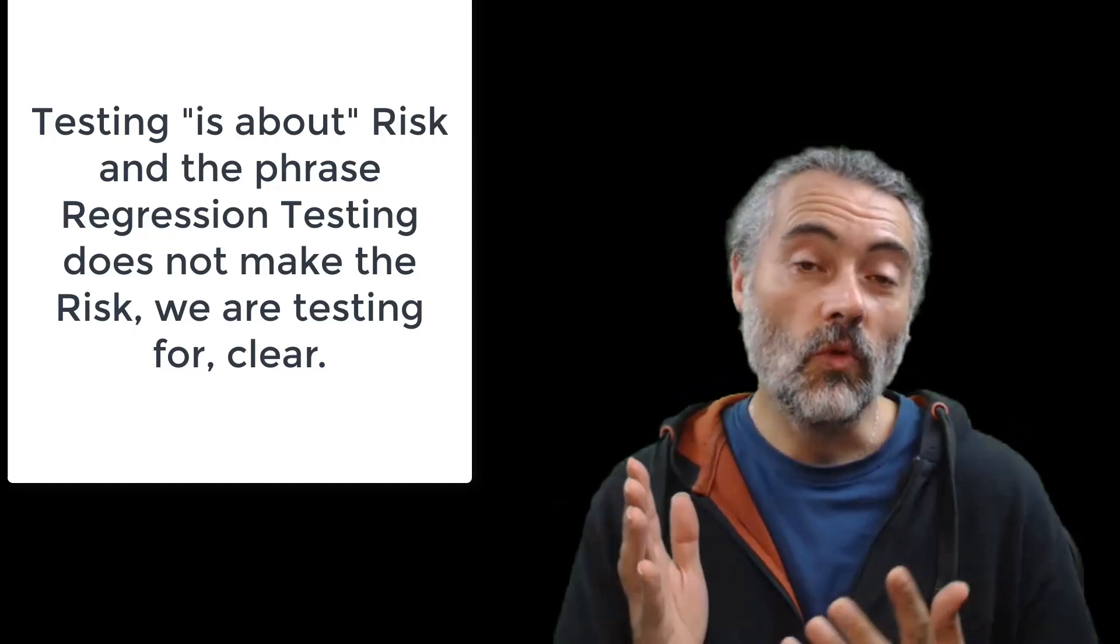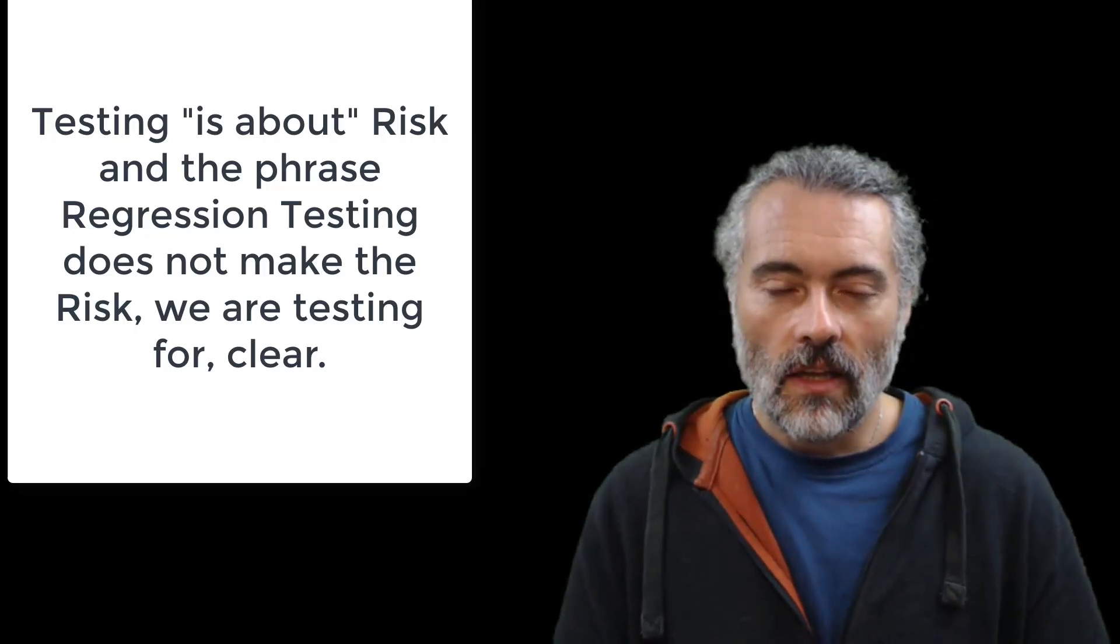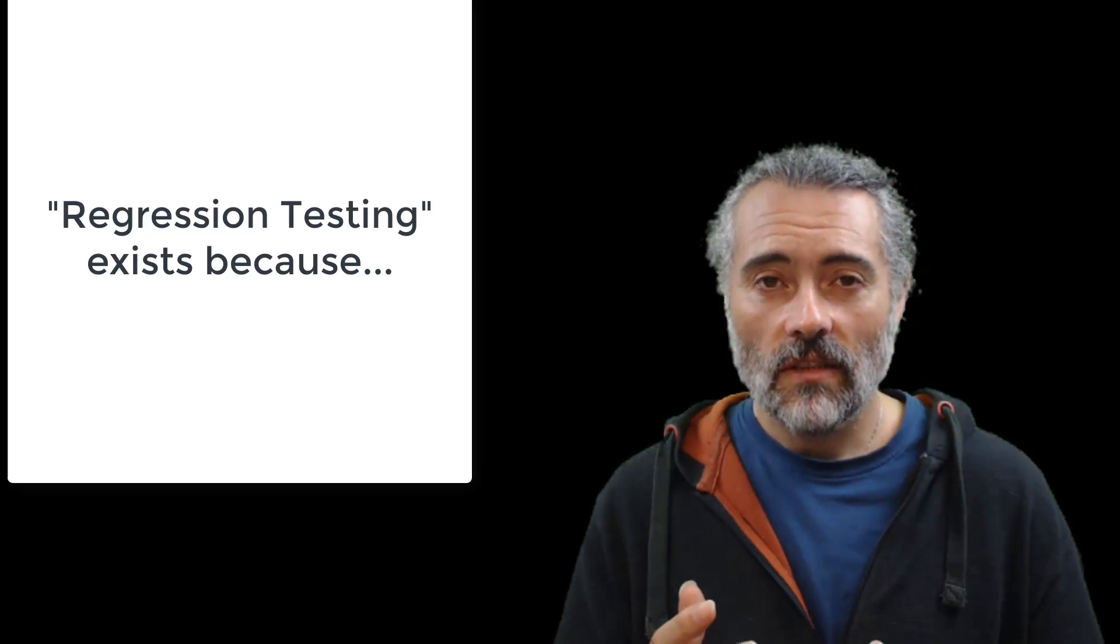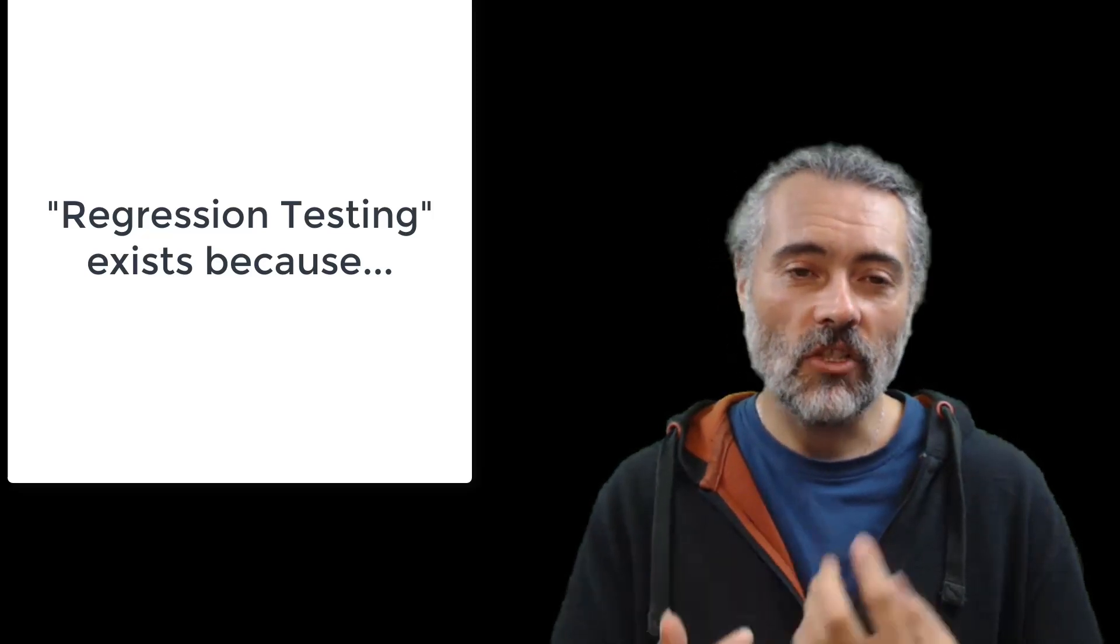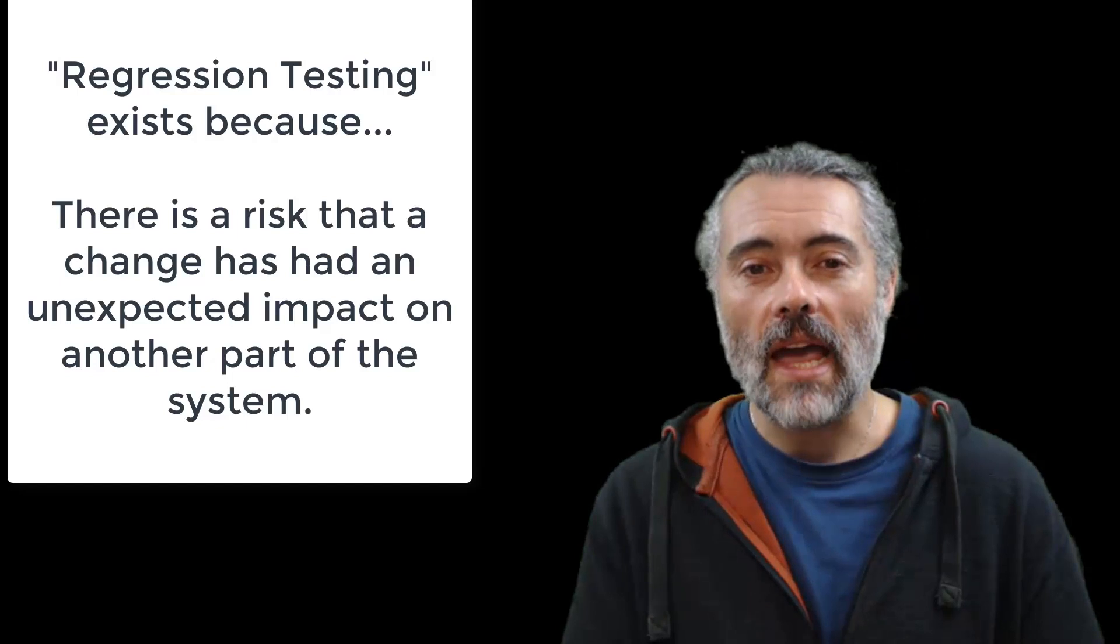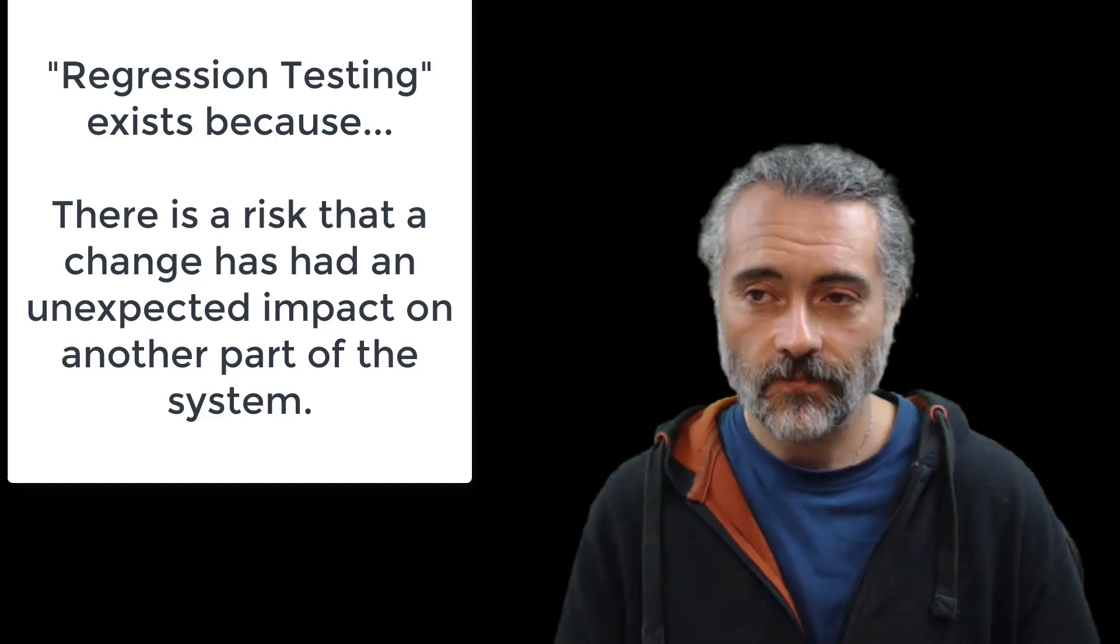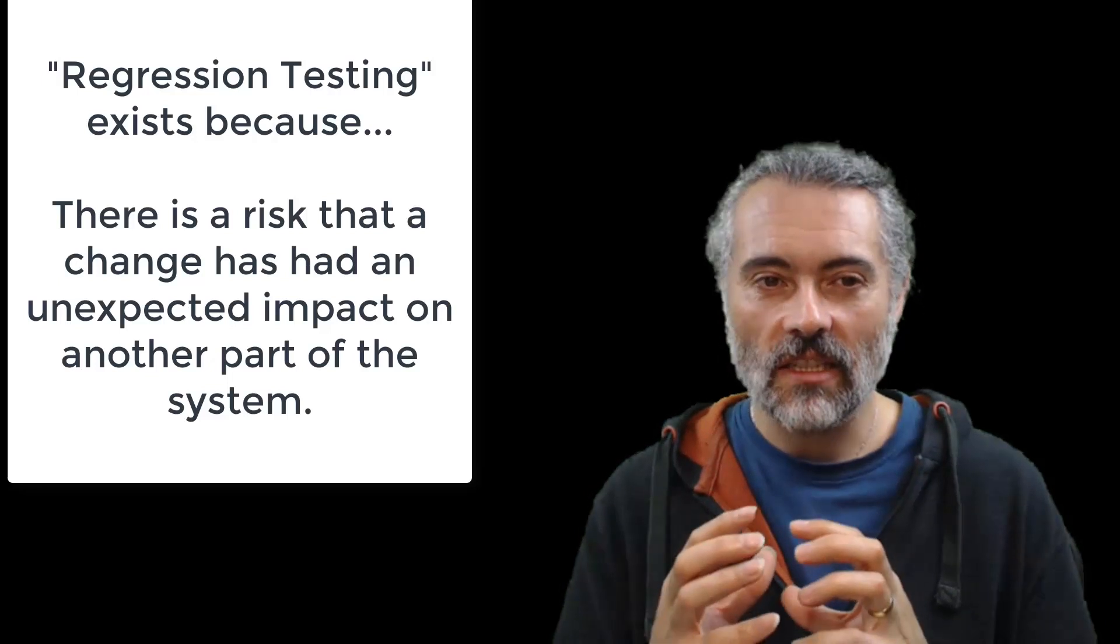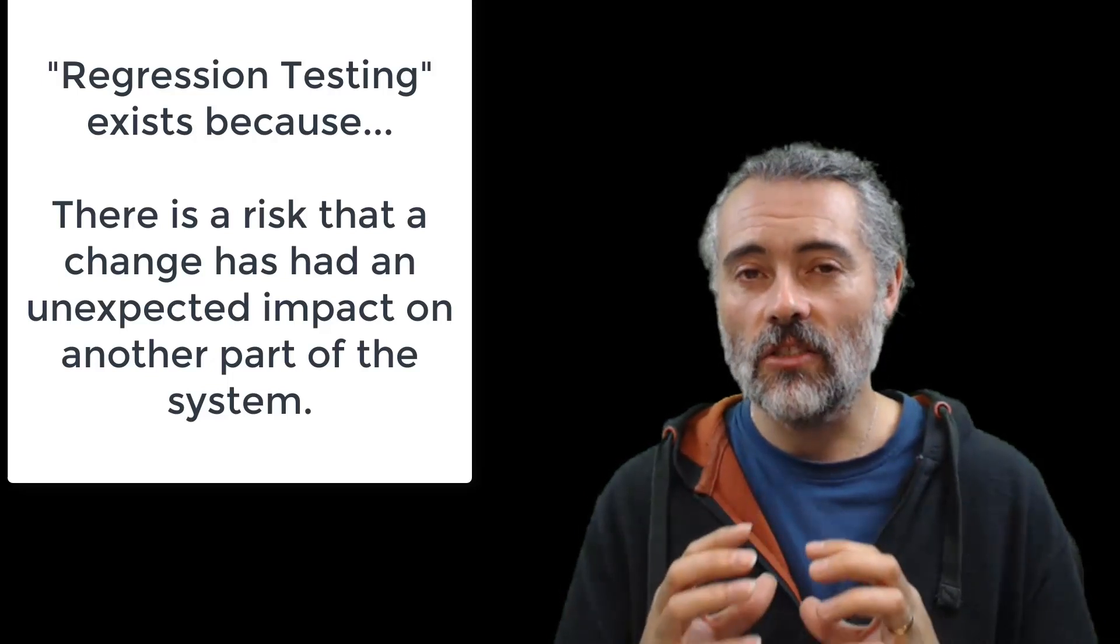Otherwise, who knows what will happen? So if we redefine regression testing in terms of risk, then what we're saying is that there's a risk that a change has had an unexpected impact on another part of the system. So that doesn't mean that we have to use testing as our only mitigation strategy for that.